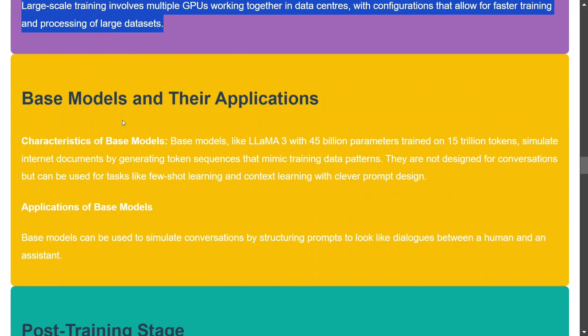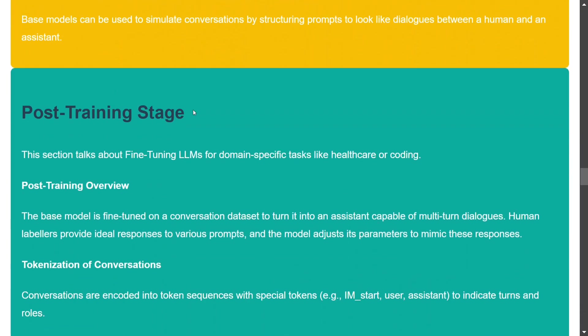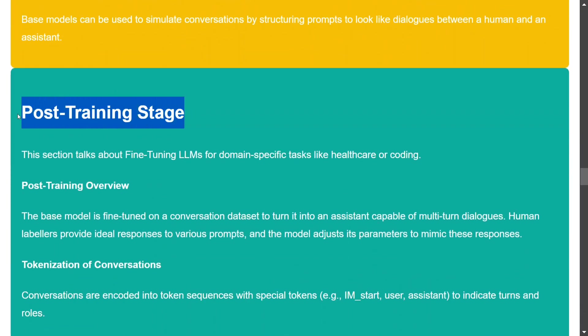He briefly covers base models like Llama 3, which has about 45 billion parameters, and how they are used. This section is relatively straightforward, explaining the different types of base models available.